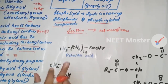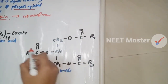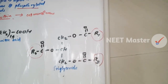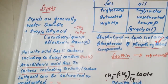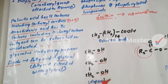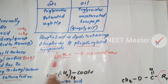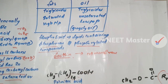Palmitic acid has 16 carbons. The structure of triglycerides has R1, R2, and R3 groups, which are fatty acids. Lipids are water-insoluble compounds found in cells. Glycerol is trihydroxy propane. Fatty acid is esterified with glycerol. Fats are saturated and oils are unsaturated. Fats have a high melting point and oils have a low melting point. Phospholipids contain phosphorous and are found in the cell membrane.